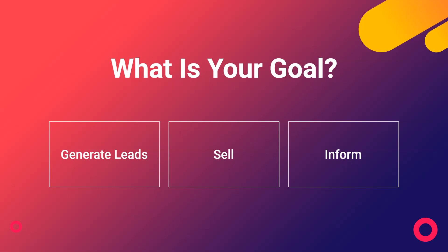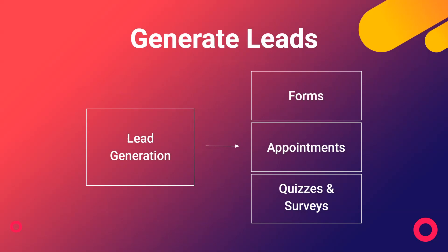For lead generation in particular, there are a few ways — we have a video about each one. The three ways of collecting information: is it through forms, filling in answers to whatever questions you want? Is it about accepting an appointment, where with filling in information they also pick a time and day to be scheduled, either online or a physical local appointment depending on your business? And lastly, quizzes and surveys — a more creative, step-by-step way to get information from users, where you can even show different outcomes depending on their answers.